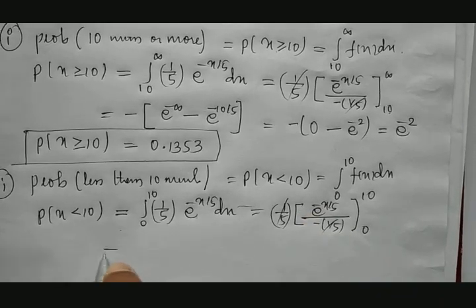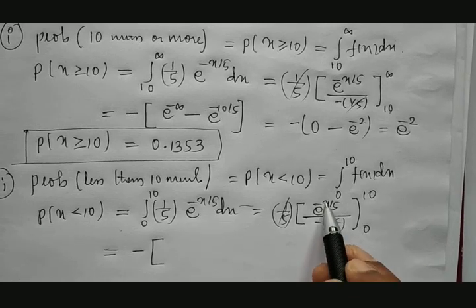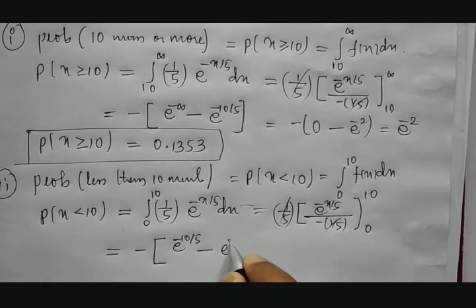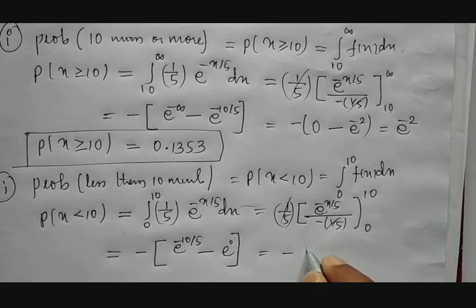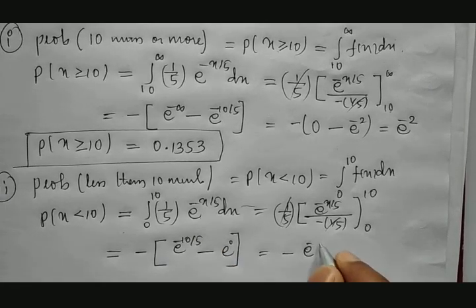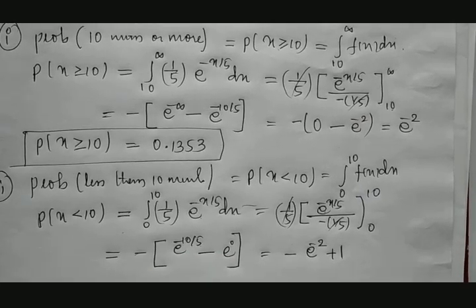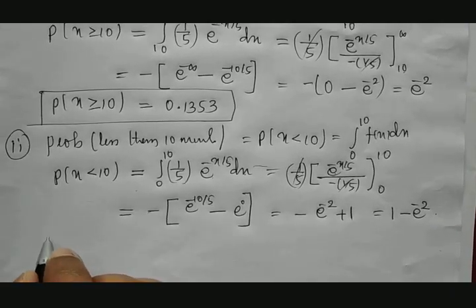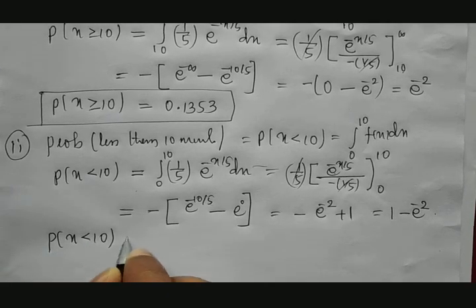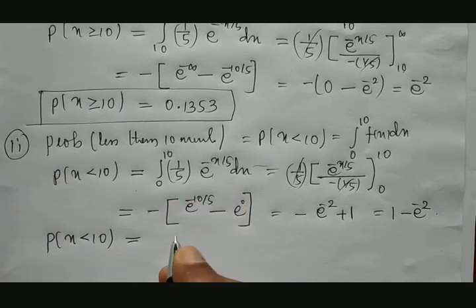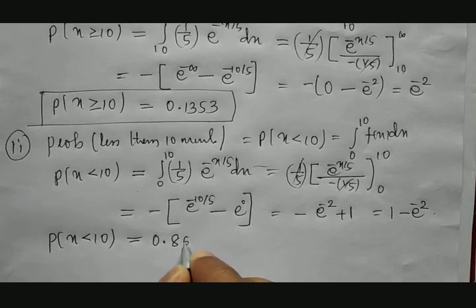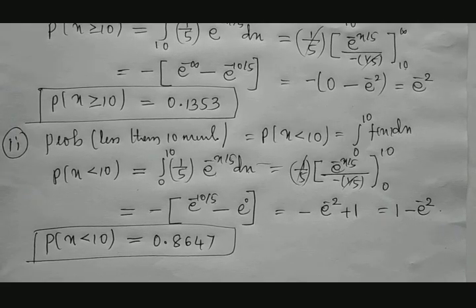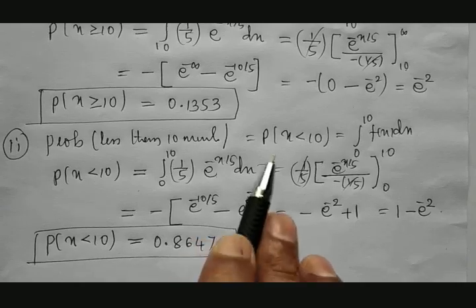Therefore, P(X < 10) = 1 − e^(−2) ≈ 0.8647. This means there is an 86.47% chance that the rain ends within 10 minutes.